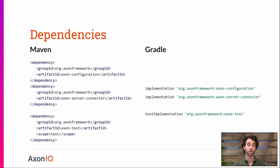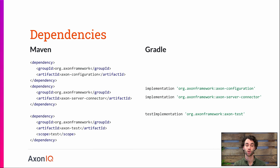First, let's go for the dependencies. The required dependency we really need is Axon Configuration, to give us the configuration to define all the infrastructure components you need from the framework, and to tie in your own components in the framework. Secondly, we're going to use Axon Server, so we need the Axon Server connector dependency as well. And lastly, testing is going to be covered, so we also want to have the Axon Test dependency as a test-scoped dependency.